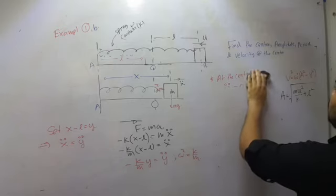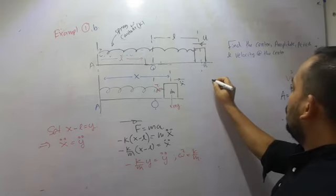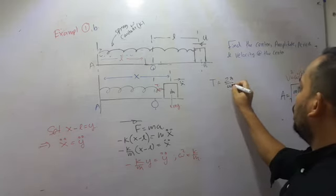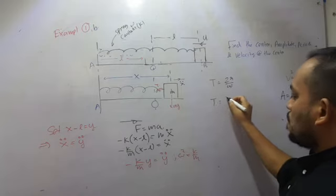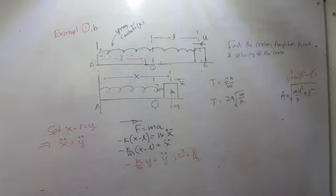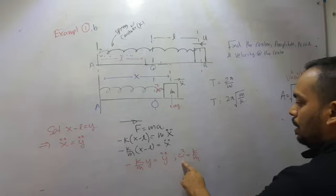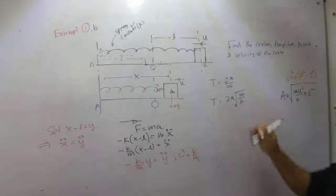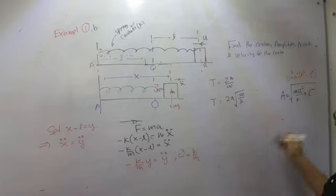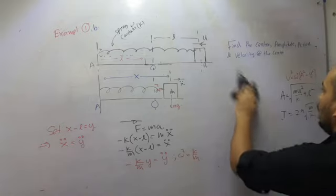Now for the period: T = 2π/ω, so T = 2π√(M/K). Notice that the period does not change compared to the previous example, because ω remains the same — ω = √(K/M) regardless of initial conditions. So the period is unchanged.